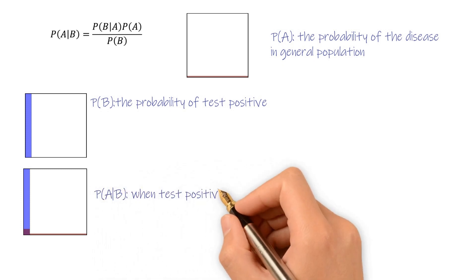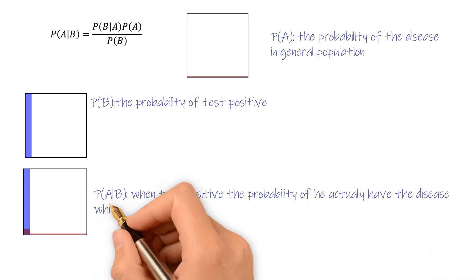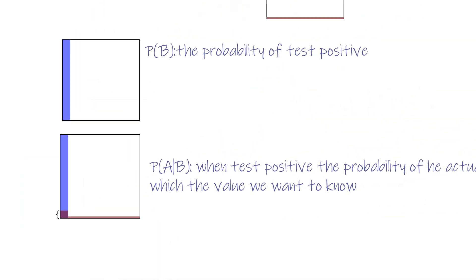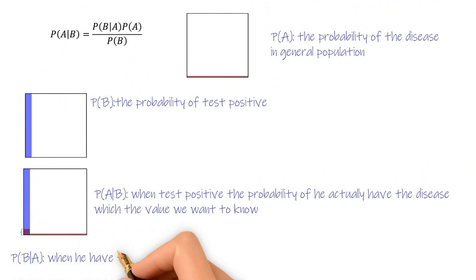P(A|B) is when test positive, the probability of he actually have the disease, which is the value we want to know. P(B|A) is when he have the disease, the probability of having a positive test result.